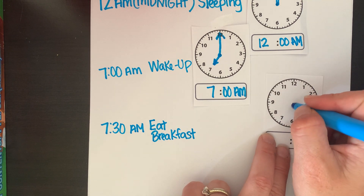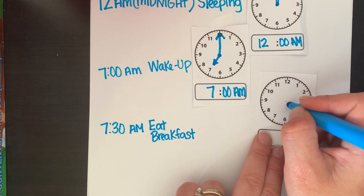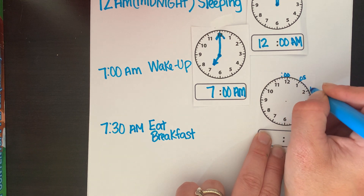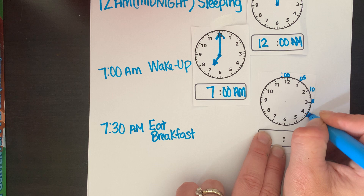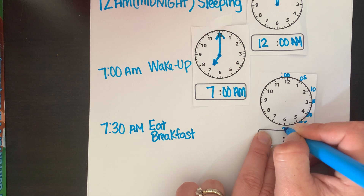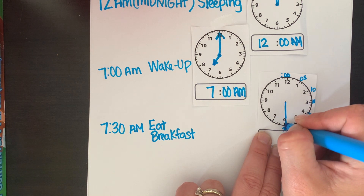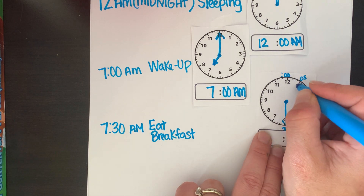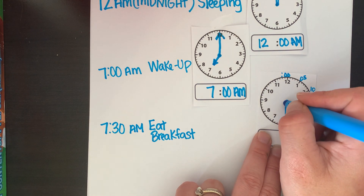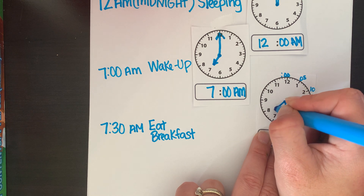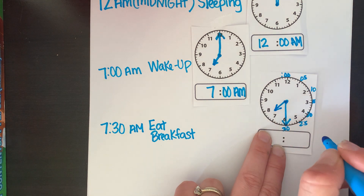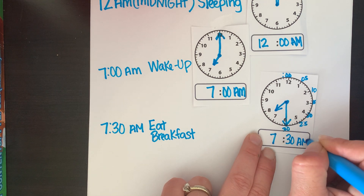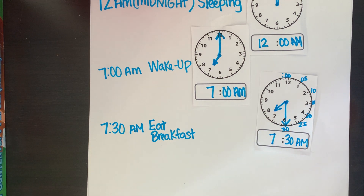Counting by fives: 5, 10, 15, 20, 25, 30 — so I know my minute hand is definitely on the 6. But I'm remembering that I'm already halfway through the 7 o'clock hour, so my hour hand is going to be halfway between my 7 and 8 o'clock. So at 7:30 a.m., I'm eating breakfast.